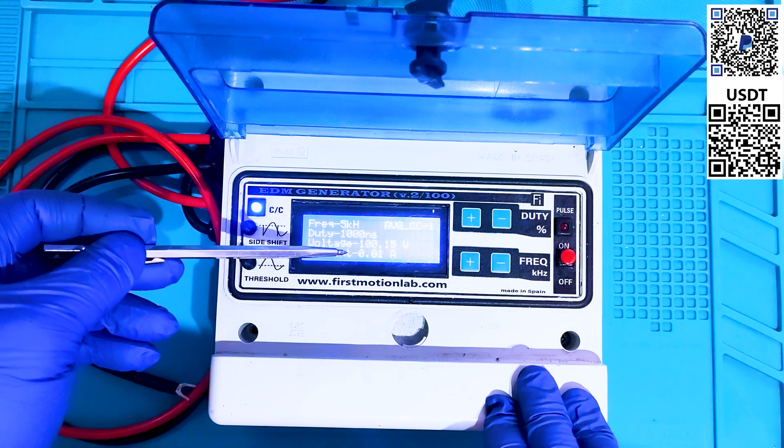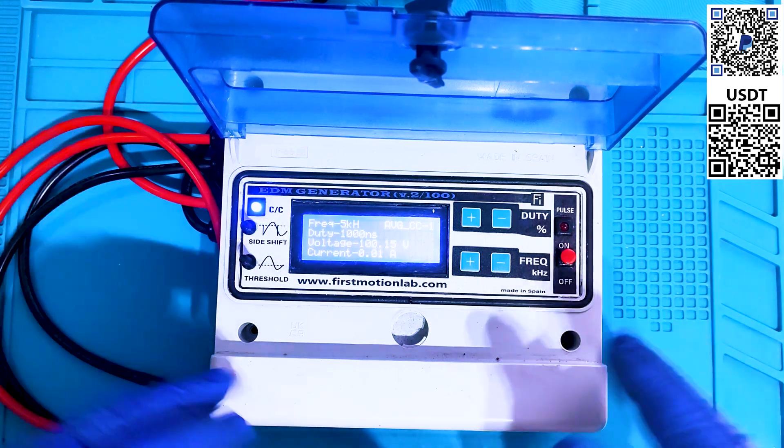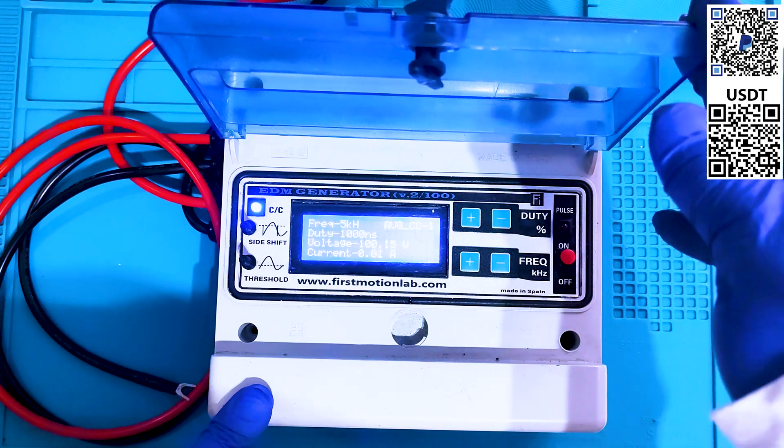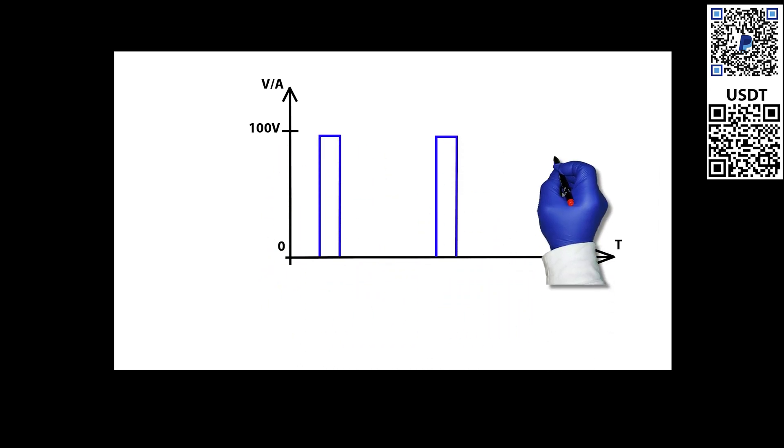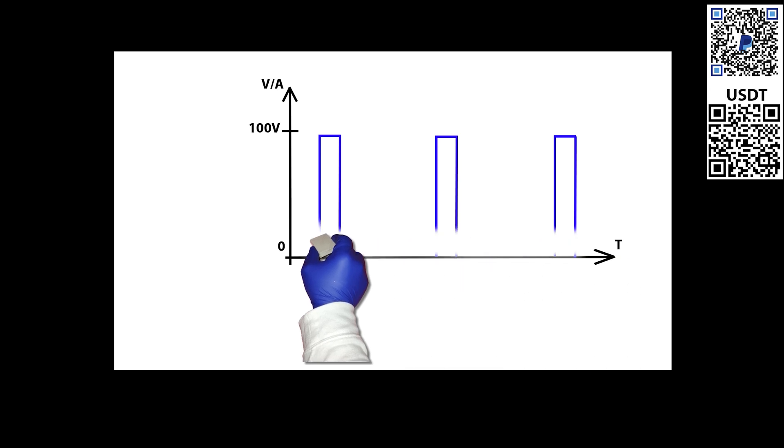There are voltage indicator and current indicator on the screen of this device. So let's have a look at this chart. When the generator is working, the voltage pulses look like this.